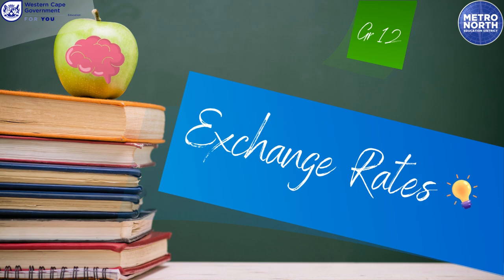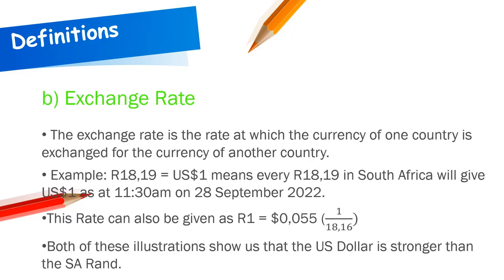Now moving straight into exchange rates. The definition of an exchange rate: it is the rate at which the currency of one country is exchanged for the currency of another country. For example, if you need one US dollar, the exchange rate is 18 rand and 19 cents — meaning the value of one US dollar is equivalent to 18 rand and 19 cents.